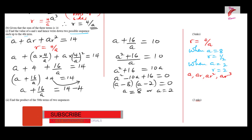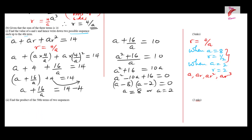Using a = 8 and r = 1/2, the first sequence is 8, 4, 2, 1. Using a = 2 and r = 2, the second sequence is 2, 4, 8, 16. So this is the first sequence and that is the second sequence.